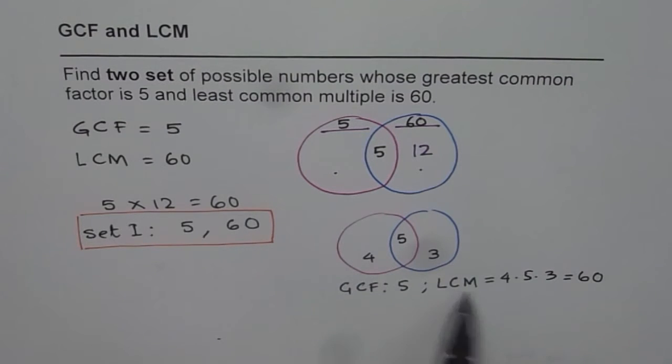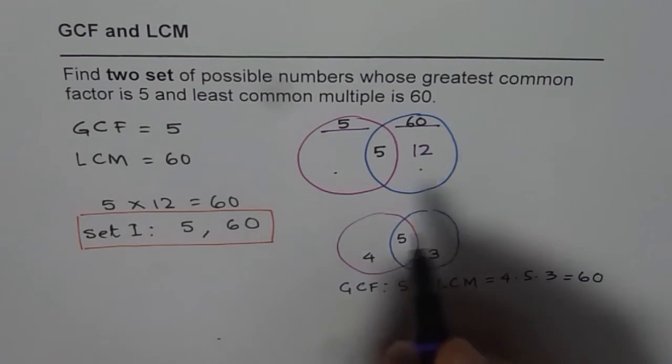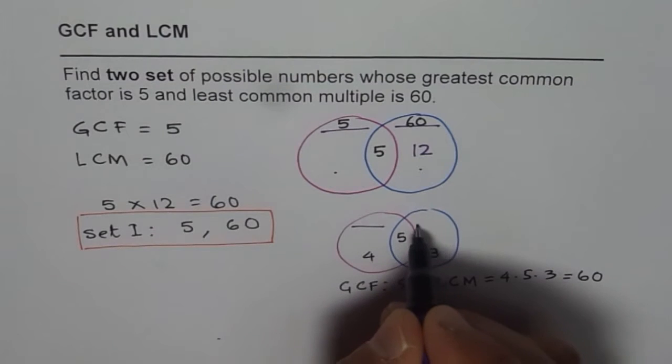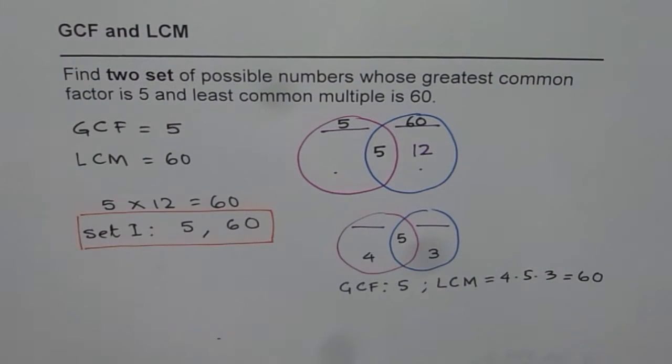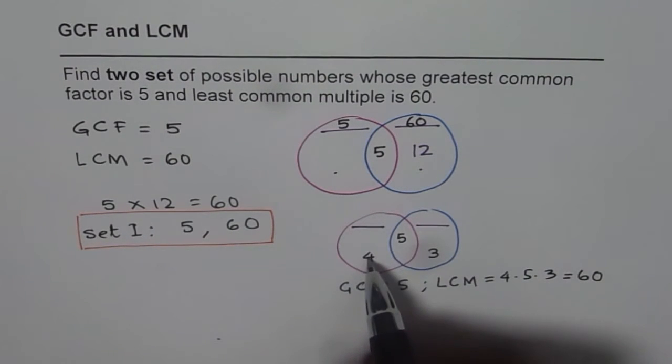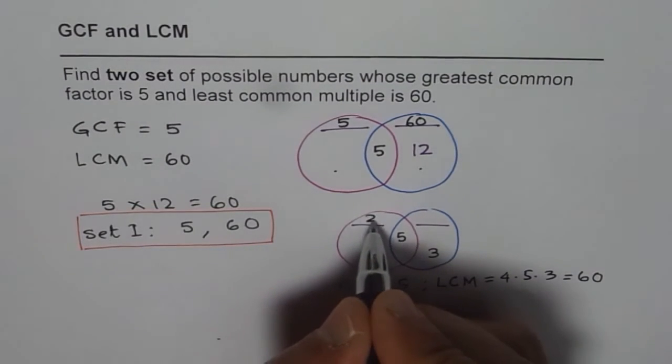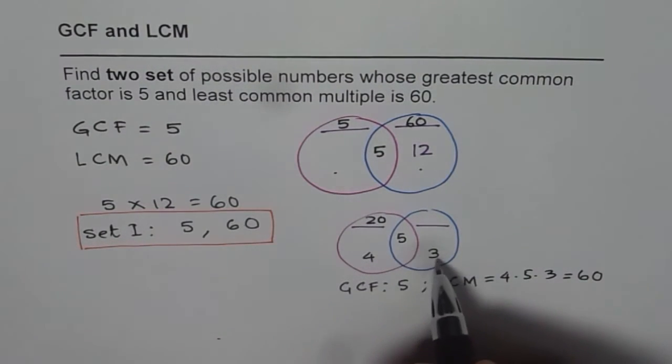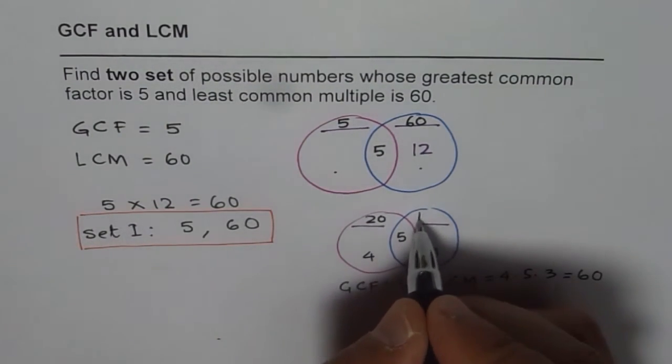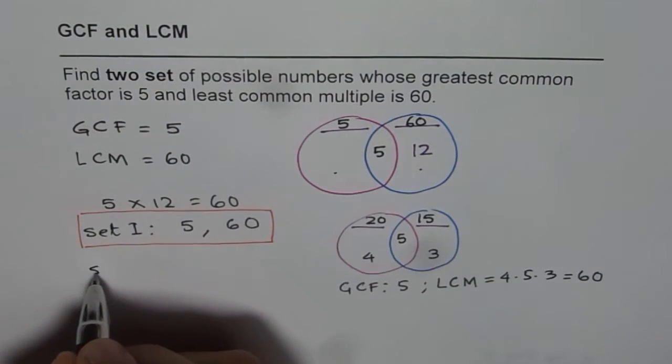So we get both the conditions. So what are the numbers? We can now write down our numbers. The numbers are 5 times 4 is the first number which is 20. 5 times 3 is the second number which is 15. So we get our second set.